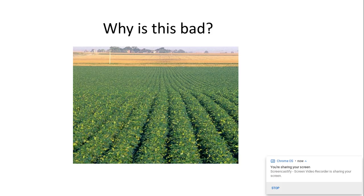We're now going to be starting to look at agriculture. As the human population is growing, we need to create more land or more areas for growing crops to feed the growing population. This is an example of monoculture — mono meaning one, culturing the crops — where you get massive fields growing one crop and one species. This is really bad for biodiversity: it decreases habitat biodiversity, species diversity, and also genetic biodiversity of the area.